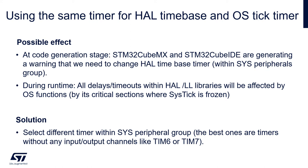The solution for this is selection of a different timebase timer to be used for HAL libraries. It can be done within the Sys peripheral group in STM32CubeMX or STM32CubeIDE. The best choice is either Timer 6 or Timer 7, as those two do not have any input or output channels.